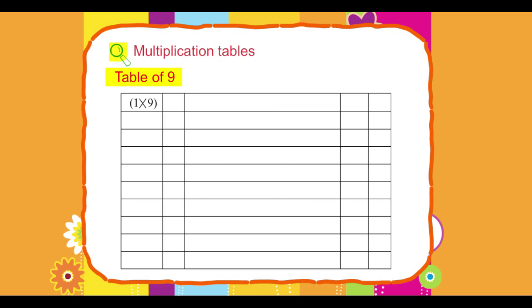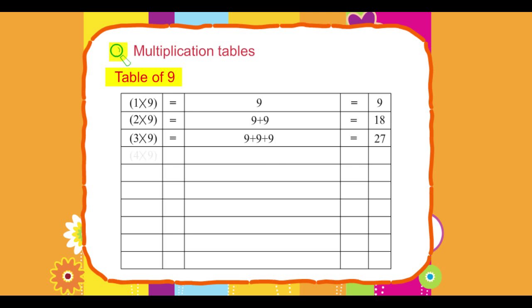Table of 9. 1 into 9 equals 9, 2 into 9 equals 18, 3 into 9 equals 27, 4 into 9 equals 36.